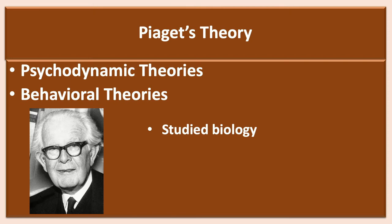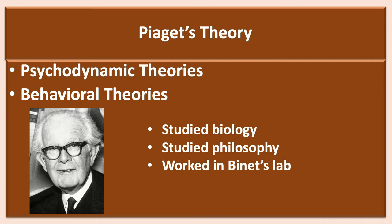Piaget was a remarkable scholar who produced his first published paper on mollusks at the age of 11. He continued to study biology as well as philosophy and earned a PhD at the age of 22. He then went to Paris and taught at a school run by Alfred Binet and worked in his lab where Binet was developing an intelligence test.